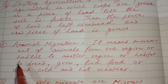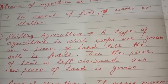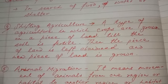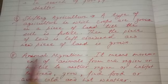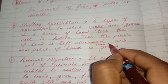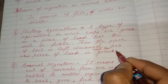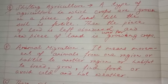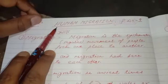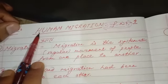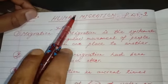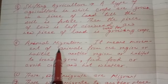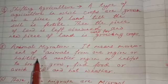Shifting cultivation — I am repeating once again. Shifting cultivation is a practice of growing crops on a piece of land till the soil is fertile, and then the piece of land is left and a new piece of land is used for growing crops. So you might have understood what shifting agriculture is. The topic we are dealing with today is human migration. A question can arise: does migration happen only in human beings? No — migration happens in animals also. Animals also migrate from one habitat to another habitat, from one region to another region.